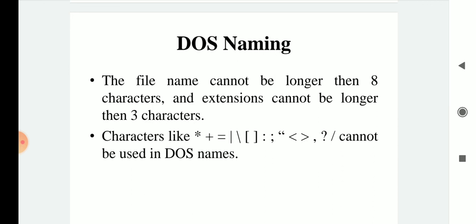Whatever comes after the dot is your extension — for example, .pdf means it is a PDF file. DOS naming rules state that the file name cannot be longer than eight characters and the extension cannot be longer than three characters. Also, you cannot use certain characters like *, +, or = in DOS file names. These are the various characters that cannot be used for DOS naming.